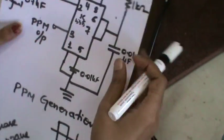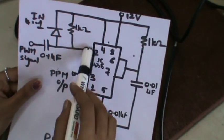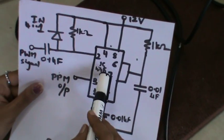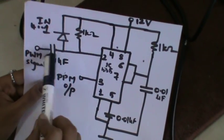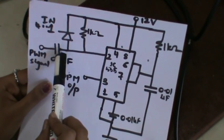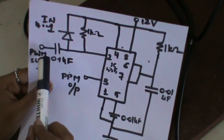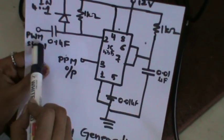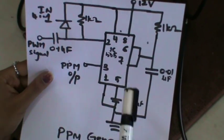Now we can check this on the CRO. The circuit used is the IC 555 timer — the same circuit used for a monostable multivibrator. Give the input to the second pin via a 0.1 microfarad capacitor; this is the modulated signal of PWM. Initially give a square wave of 12 volt amplitude and check the output across pin number 3.